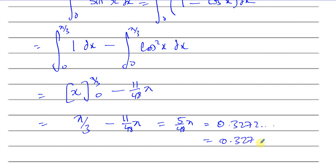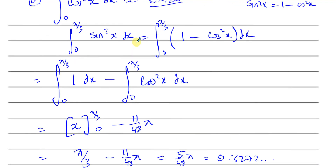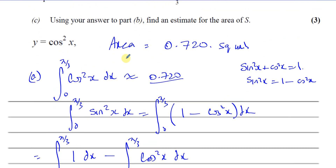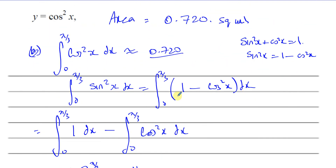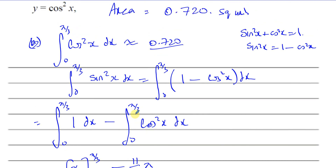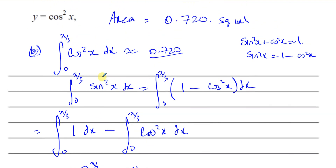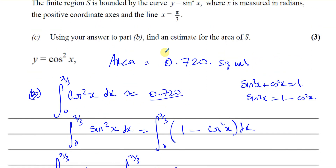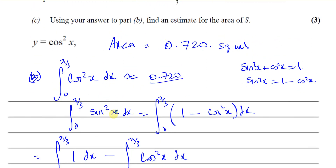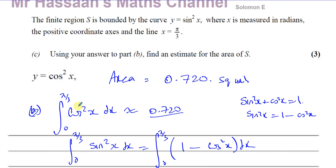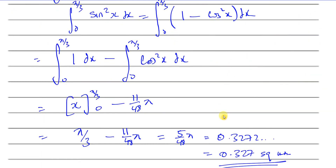So the area of region S is 0.327 square units, and that's the answer to part C. We used the answer to part B to find part C. This is a very common type of question in the new P2 papers — they try to relate your trapezium rule answer to the next question. Here we had to express sine squared x in terms of cosine squared x.